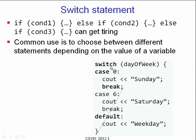That variable is not allowed to be a float or a string — it can only be a discrete variable type like character, integer, long integer, or short. These values are possible values of that variable. 'case 0:' means if day_of_week is 0 do this; 'case 6:' means if day_of_week is 6 do that. 'default:' is executed if none of the conditions are satisfied — it always comes last in the switch body.